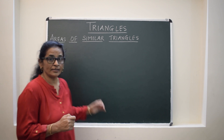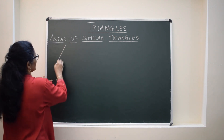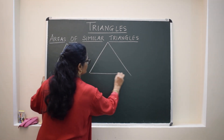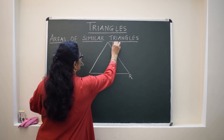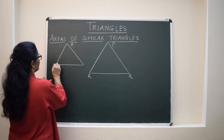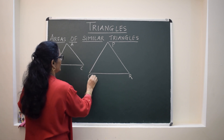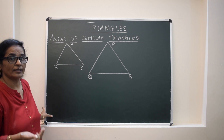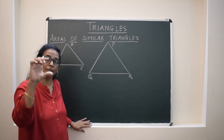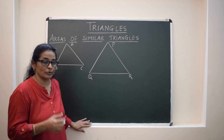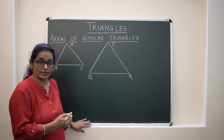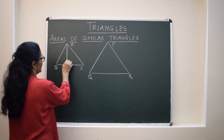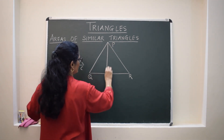We will first look at two triangles which are given similar. These are two triangles ABC and PQR. To find the ratio of their areas, we need the base and the perpendicular, so one construction is required. The construction will be perpendiculars AM and PN drawn from the respective vertices.